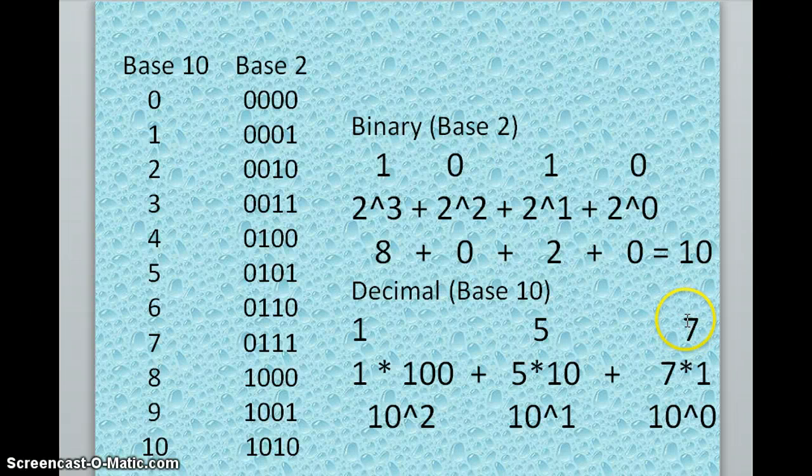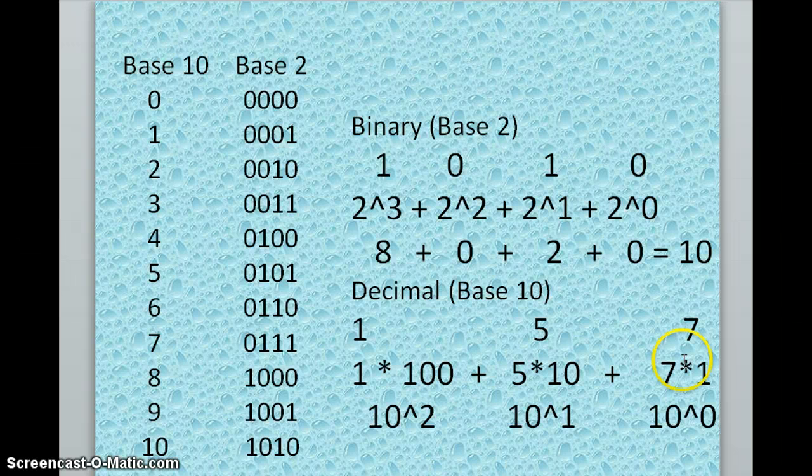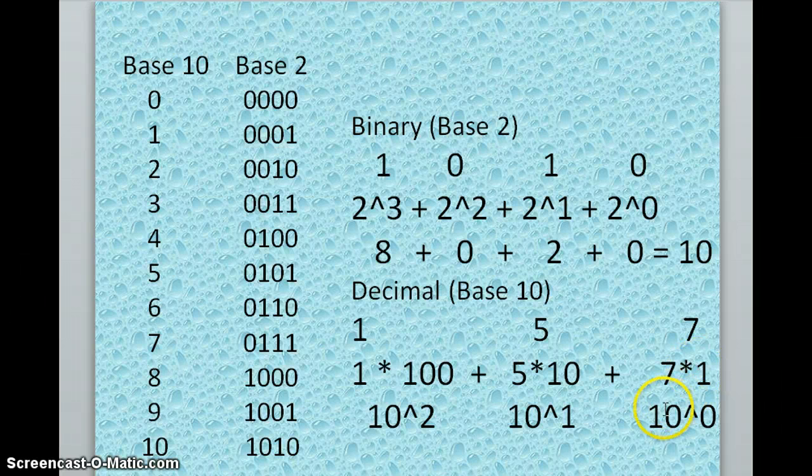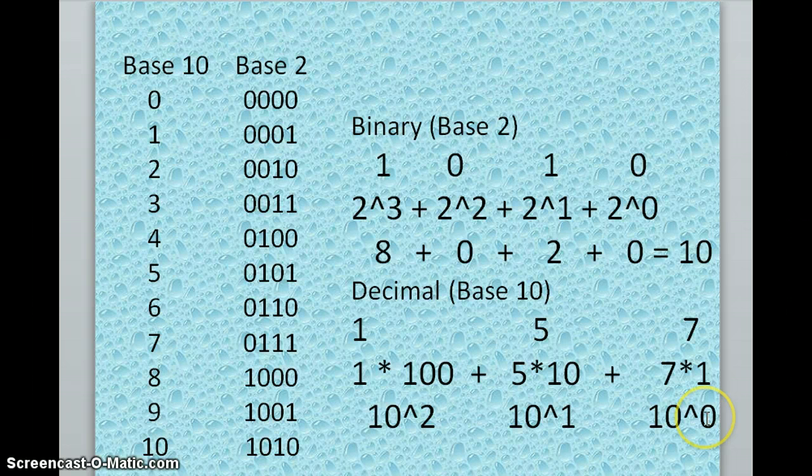Base 10 basically works like this: you always start with an exponent of zero, and then you go from right to left, increasing by one every time. So you'll say, what is the value of my first exponent? 10 to the 0 is what? It's 1.